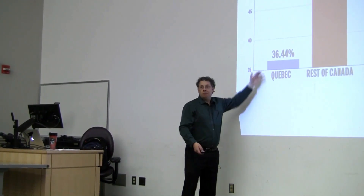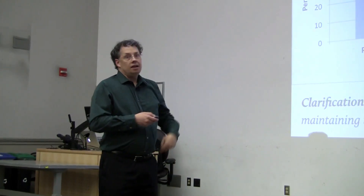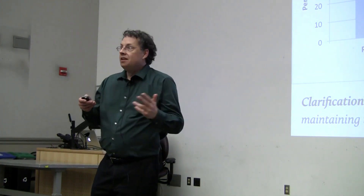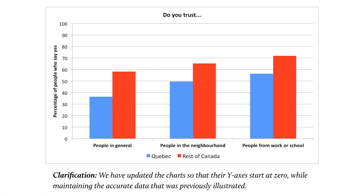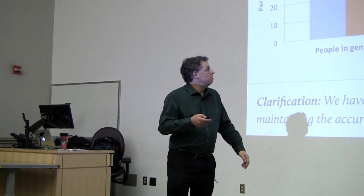So why do they have a trust problem? Well, maybe it has something to do with their media. In their defense, somewhat — they were actually forced to retract and publish a correction to this graph. Here is the graph now done properly, going all the way down to zero. And while we do see that trust levels are lower in Quebec — admittedly without sample sizes or error bars — we don't see anything like the catastrophic difference illustrated by the original graph.